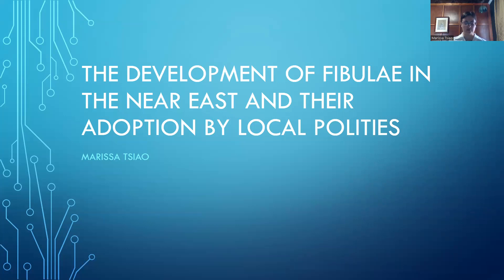The precursor to the fibula, the toggle pin, first appears as early as the Chalcolithic period and was introduced to the Southern Levant by the end of the early Bronze Age from Anatolia. This type of pin was worn throughout the Bronze Age before disappearing entirely by the Iron Age to be replaced with the fibula.